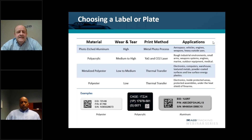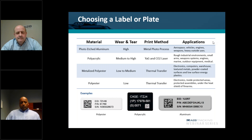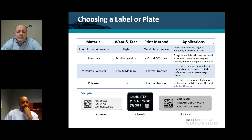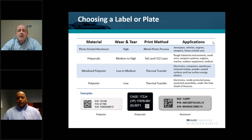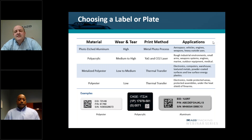Looking at the examples shown here, in the bottom left the material listed is polyester — one of the more popular materials used to create UID labels. It has very low wear and tear, uses a thermal transfer print method, and is generally used for electronics such as laptops or other electronic equipment in an office or warehouse environment indoors, with no UV exposure. Metalized polyester has a bit more durability but also uses the same thermal transfer print method, and is generally used for powder coated surfaces or low surface energy plastics.